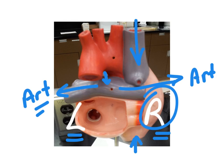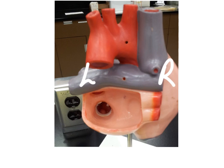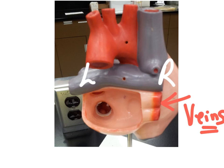Remember that this is the only exception to the rule that arterial blood carries oxygenated blood. Once the blood has been oxygenated at the lungs, it will then return to the heart via the pulmonary veins — and this is the exception to the rule that all veins carry deoxygenated blood. You are going to have the right pulmonary veins and also the left pulmonary veins, noting the left and right because this is a dorsal view.